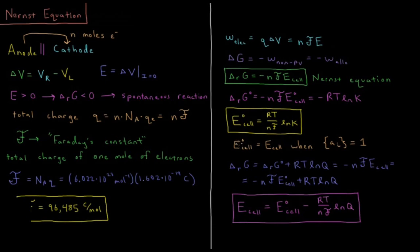The standard EMF of the cell is equal to the EMF of the cell when the activity of all species in the reaction equals 1. For metals — things like solid nickel or solid tin — the activity is always assumed to be 1. The activity of gases is the fugacity divided by 1 bar. Most importantly for us, the activity of solutes is their concentration divided by the standard concentration of 1 molar. So a 2 molar solution has an activity of 2.